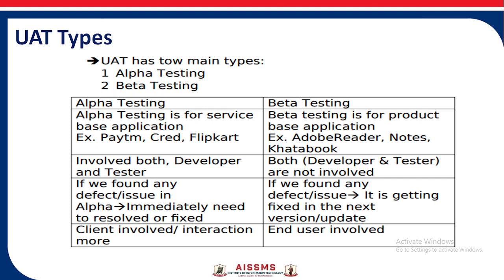User acceptance testing has two types: alpha testing and beta testing. Alpha testing is for service-based applications like Paytm, Cred, and Flipkart. It involves both the developer and tester. If any defect is found in alpha testing, it needs to be fixed or resolved immediately. The interaction with the client is more in alpha testing.